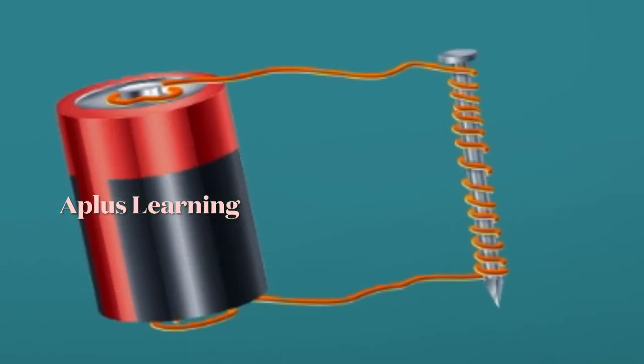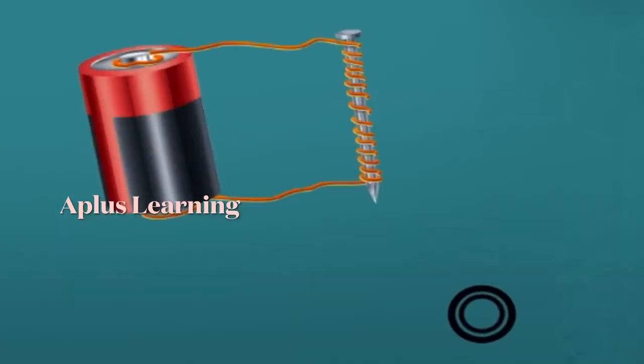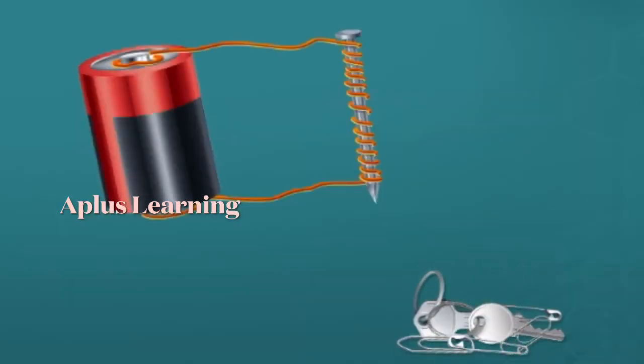Now place some metal objects on the table. Move the nail near the metal objects.